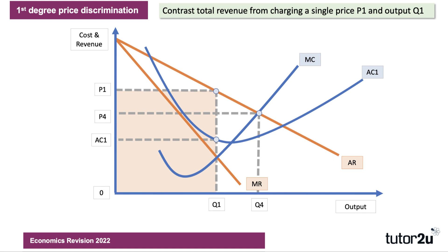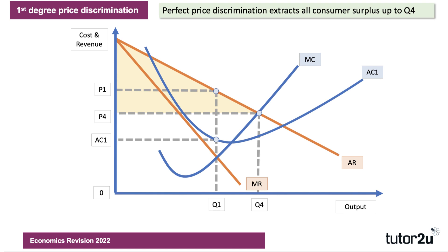If you contrast the revenue from charging a single price P1 at output Q1 with what happens under perfect price discrimination, that original revenue can be supplemented by those new shaded areas — by extracting consumer surplus, selling extra units, and increasing output up to Q4. Essentially, what we're doing is turning that consumer surplus shown in the yellow shaded area into extra revenue and profit for the firm.